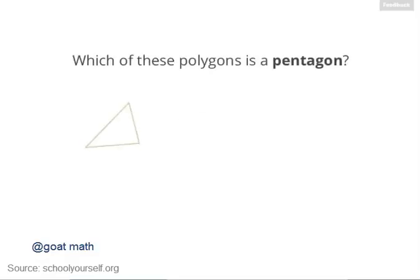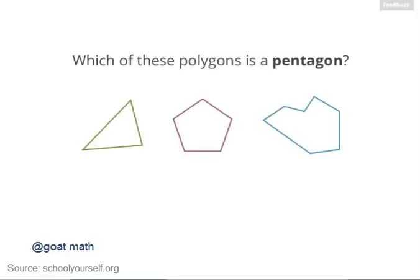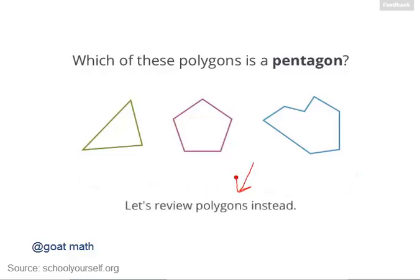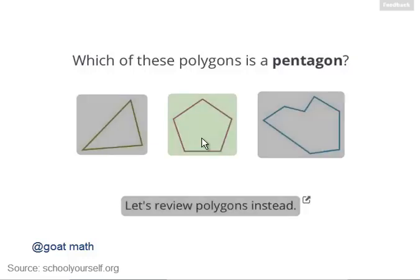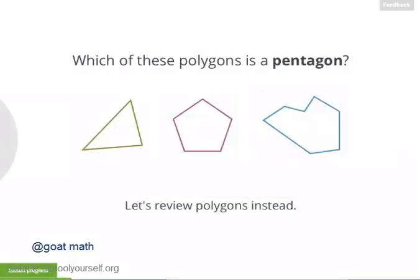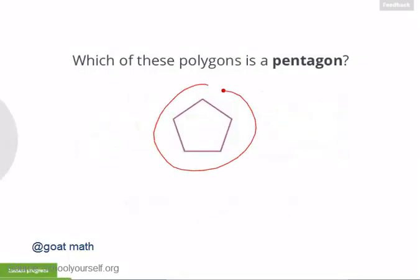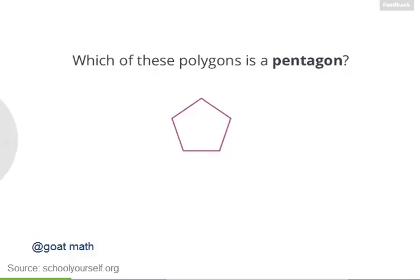Before we get started, why don't you go ahead and identify which of these polygons here is a pentagon, or click here to review polygons. This polygon is a pentagon because it has exactly five sides.